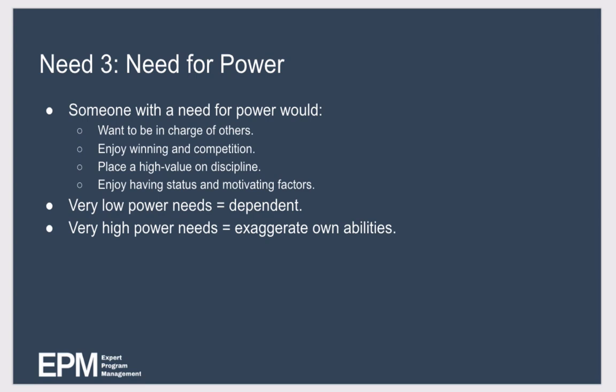Team members with a very low power need tend to be subordinate and dependent. Conversely, people with a very high power need can be rude, they can exaggerate their own abilities, and they can want to control absolutely everything.